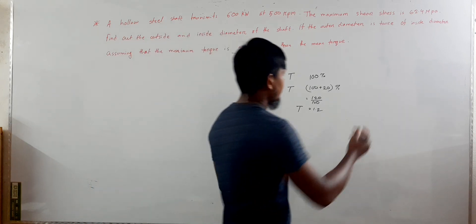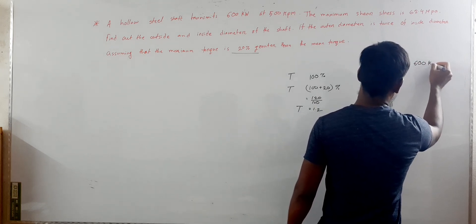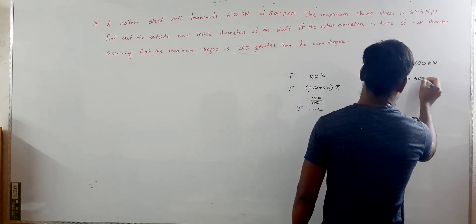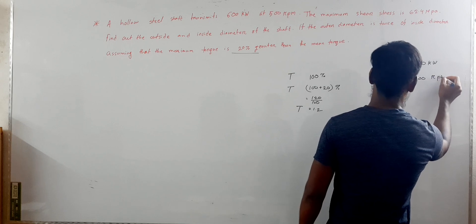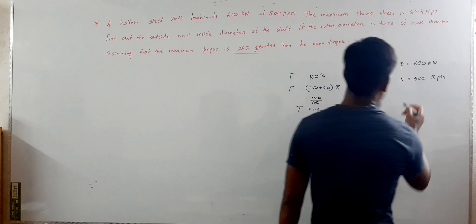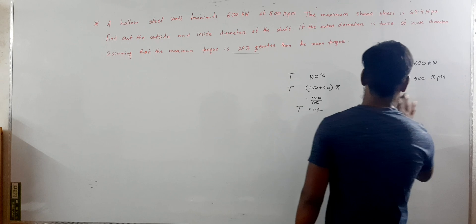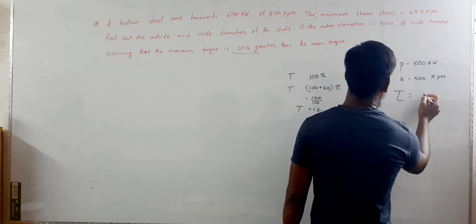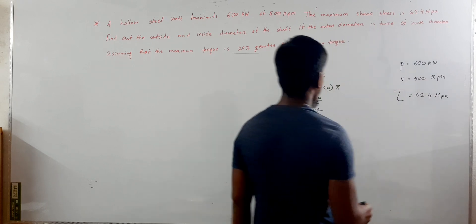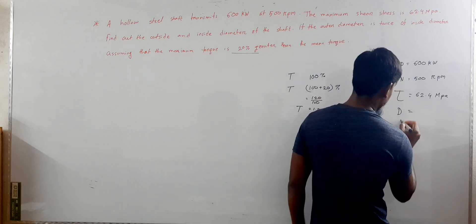The speed is 500 RPM. The shear stress is 62.4 MPa. We will use capital D for the outer diameter and small d for the inner diameter.